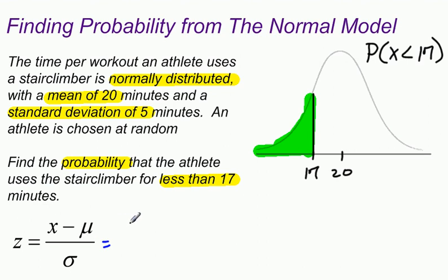So 17 is my x, mu is my mean which is 20 minutes, and sigma is my standard deviation which is 5. When you do the math, that's negative 3 over 5, which is the same as negative 0.6. So 17 as a z-score equals negative 0.6.